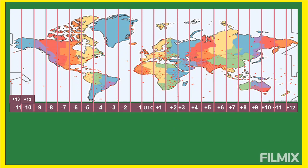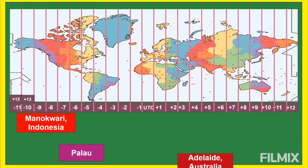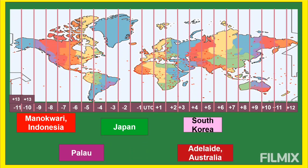Next is GMT+9, nine hours ahead of UTC, meaning these places are one hour ahead of the Philippines — so we are behind them by one hour. These include Manokwari (Indonesia), Palau, Adelaide (Australia), Japan, and South Korea, plus many other places.